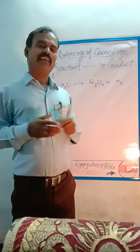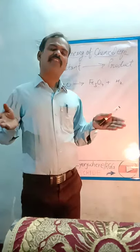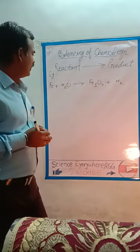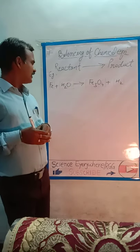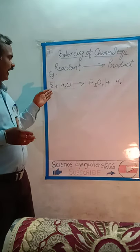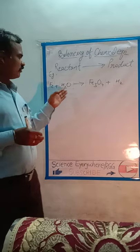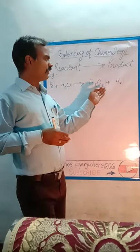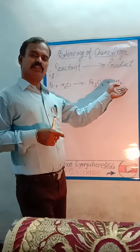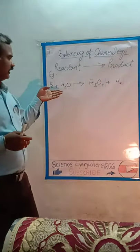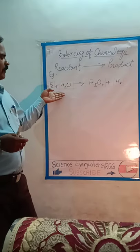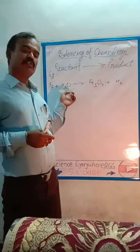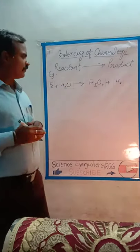We have an example: iron reacts with water to produce Fe₃O₄ plus H₂. This equation is unbalanced, so how do we balance this chemical reaction?